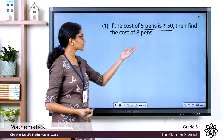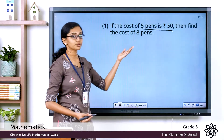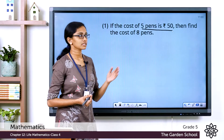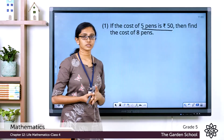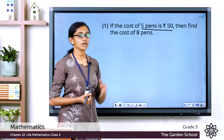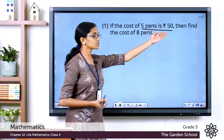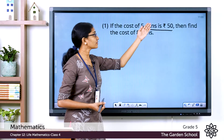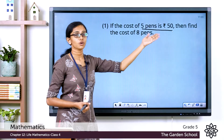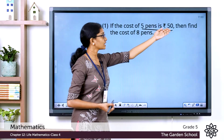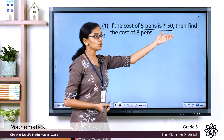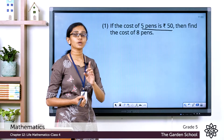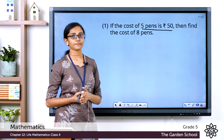From this you are asked to find out the cost of 8 such pens. We know the value of 5 pens, and from this total value we can find out the value of 1 pen. If we divide the total value by the total number of units, you will get the value of 1 unit or 1 pen.